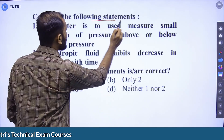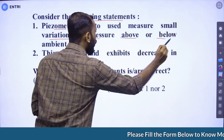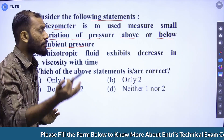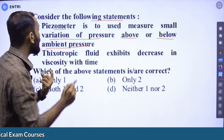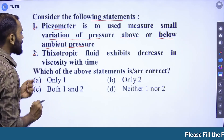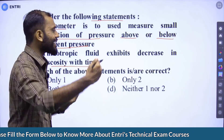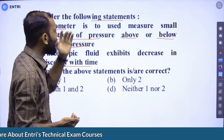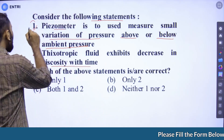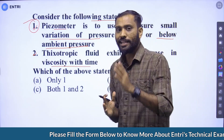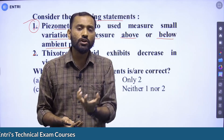Question number two: Consider the following statements. Statement one — a piezometer is used to measure small variation of pressure, above or below ambient pressure. Statement two is given. In the topic of Pressure and Its Measurement, we use instruments like piezometer, tube manometer, differential tube manometer, and single column manometer — these are the types of manometers.